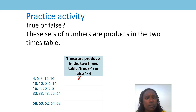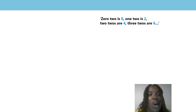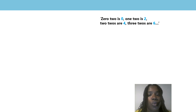But why is that? I think we should have a look at our two times table again and see if we can spot a pattern. I would like you to recite the two times table with me. We're going to use the stem sentences at the top right-hand corner to help us. Are you ready? Let's have a go.